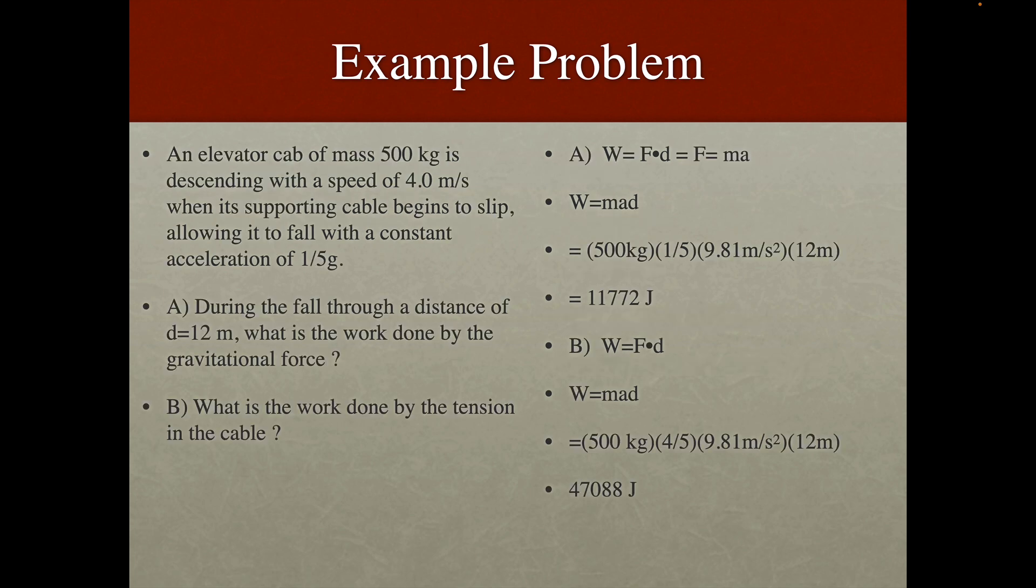Another example problem, a little bit more complicated. An elevator cabin mass of 500 kilograms is descending with a speed of 4 meters per second when its supporting cable begins to slip, allowing it to fall with a constant acceleration of one-fifth G. So the question is, during the fall through the distance of 12 meters, what is the work done by the gravitational force, and what is the work done by tension on the cable?